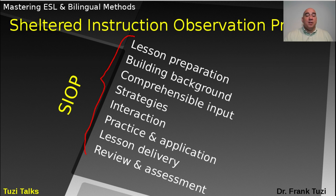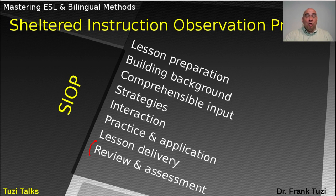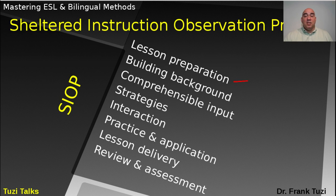SIOP includes eight components: lesson preparation, building background, comprehensible input, strategies, interaction, practice and application, lesson delivery, and review and assessment. Most of this has to do with sheltered instruction, while review and assessment also has to do with the observation protocol — how well did I do all these steps? Herrera and Murray do a fairly nice job explaining all of these. Lesson preparation covers the extra materials and things you need to think about. Building background involves bringing students' schema into the classroom to help them understand more quickly. Comprehensible input, of course from Krashen, ensures information is something students understand or just a step beyond.